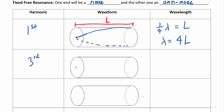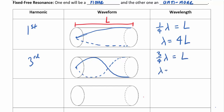The third harmonic has a node at the closed end with one additional node added along the way, ending in an antinode at the open end. Along the tube length L, we fit three quarters of a complete wavelength. So 3λ/4 = L, giving λ = 4L/3.